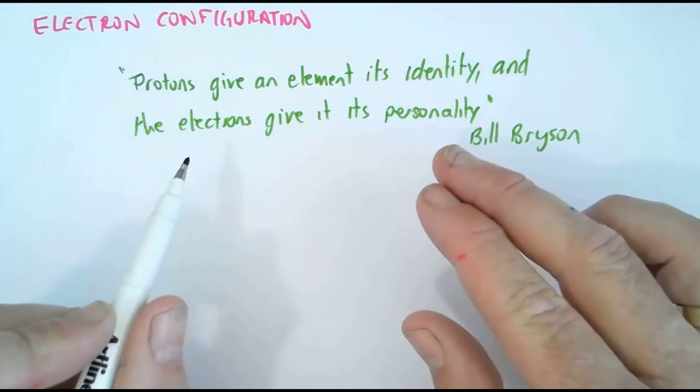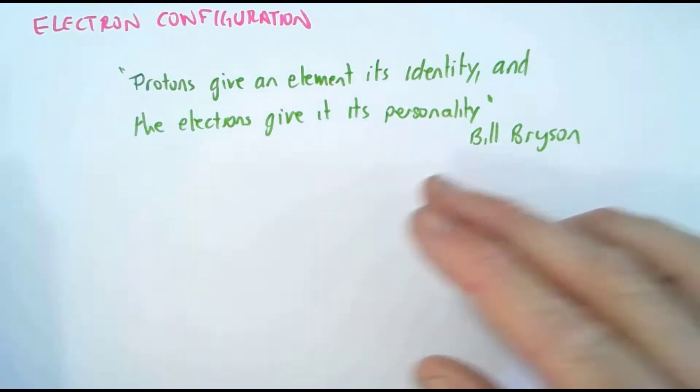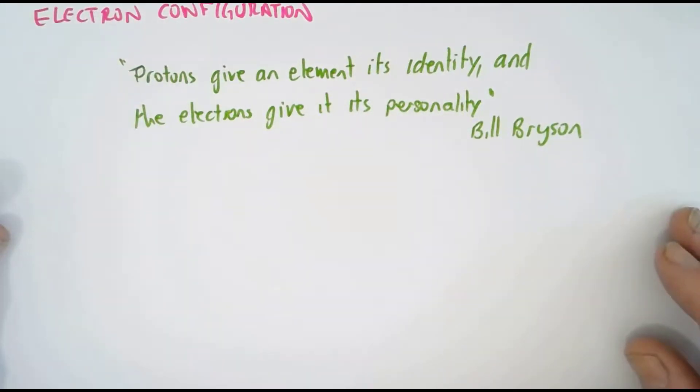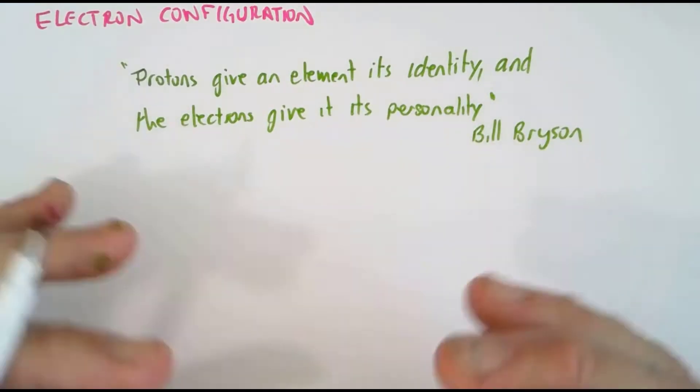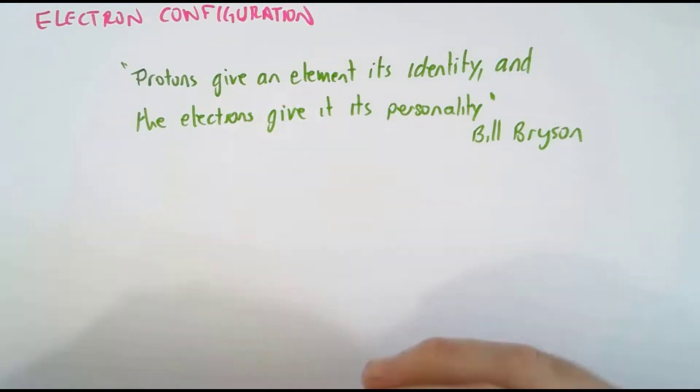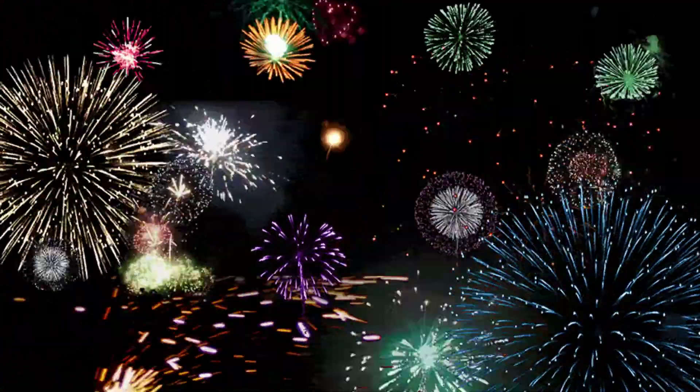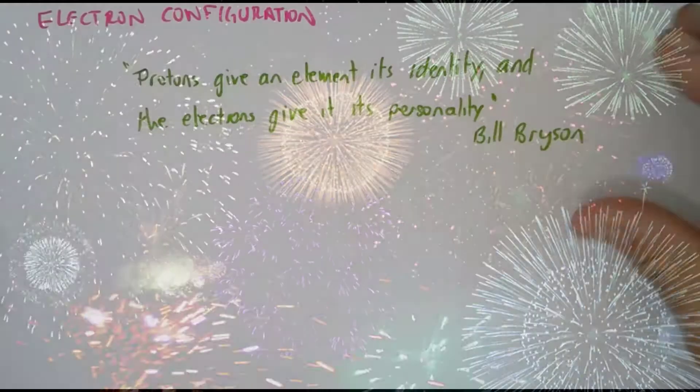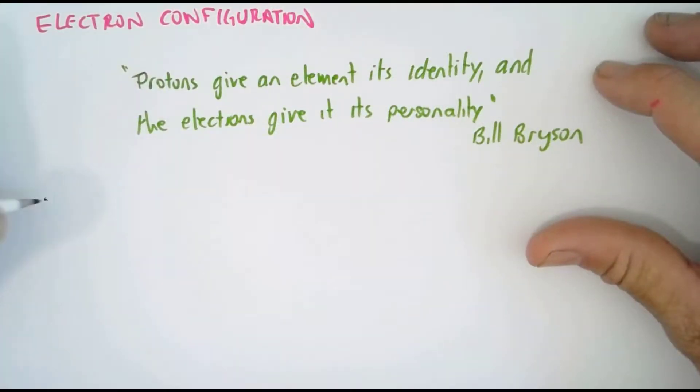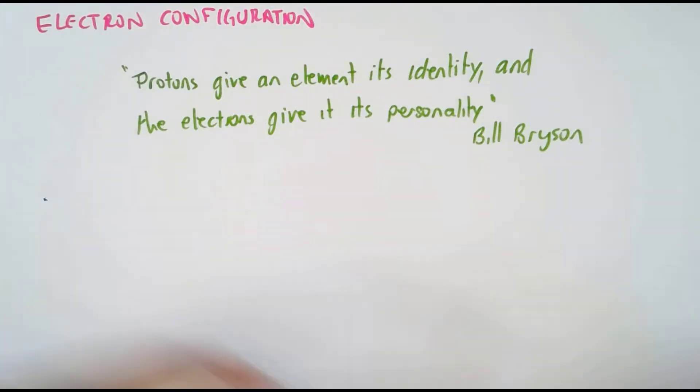But it's the number of electrons that determine its personality, because it's the configuration of those electrons and the number of electrons in the outer shell that dictates how an atom is going to behave chemically, how it forms compounds, and also the color of fireworks.